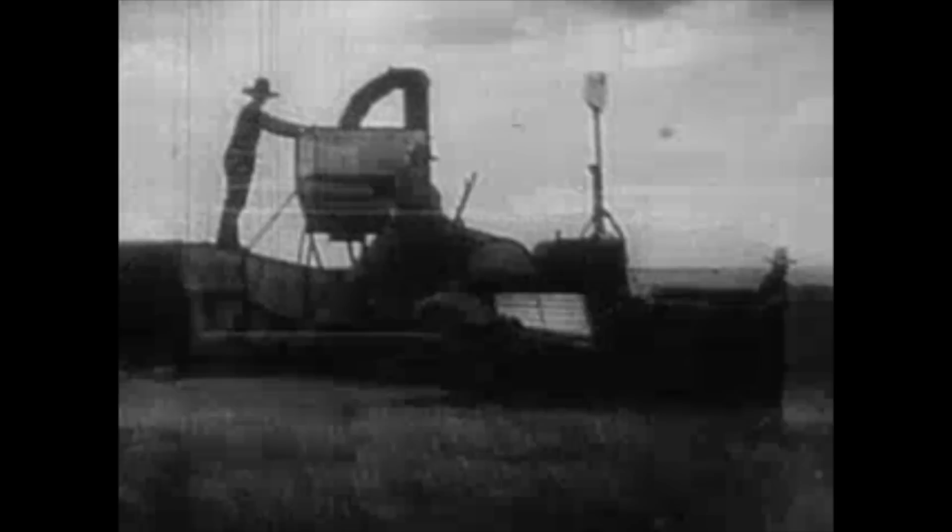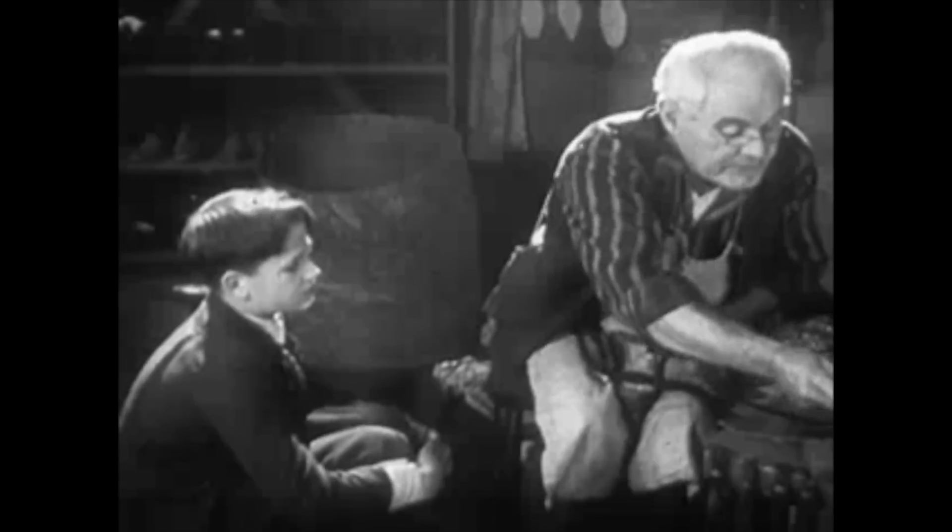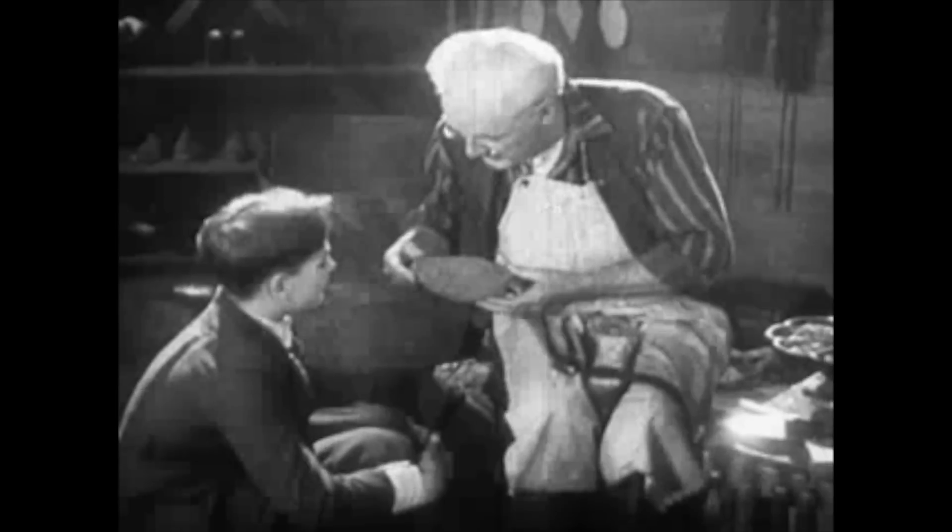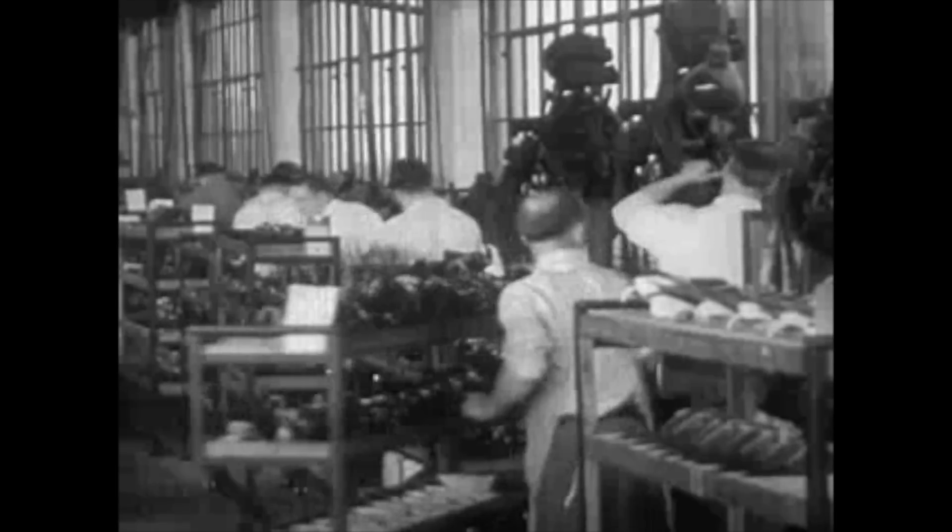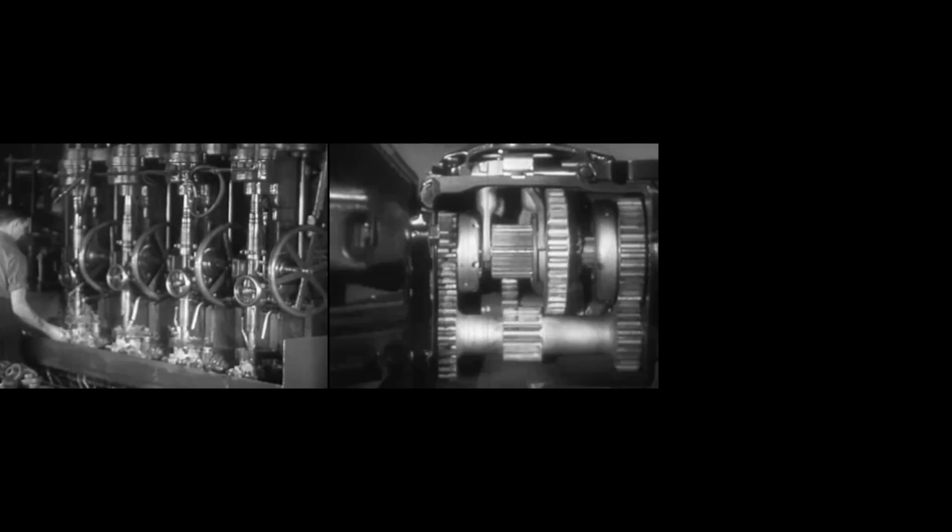And around this time, a global industry was starting to emerge based on the creation and sharing of material goods at a much larger scale. This was accomplished by moving from craft production, one person doing one thing, to mass production in factories, many people working together to make lots of one thing. This era is known as the Industrial Revolution.